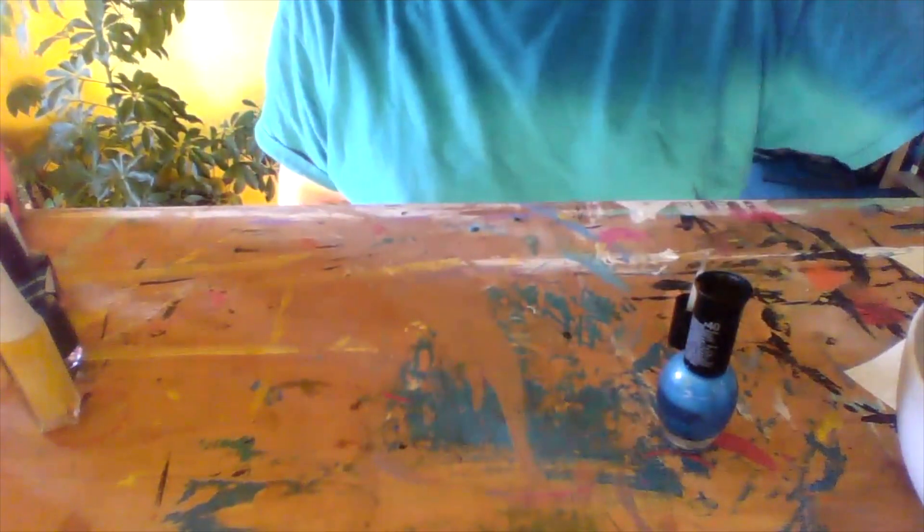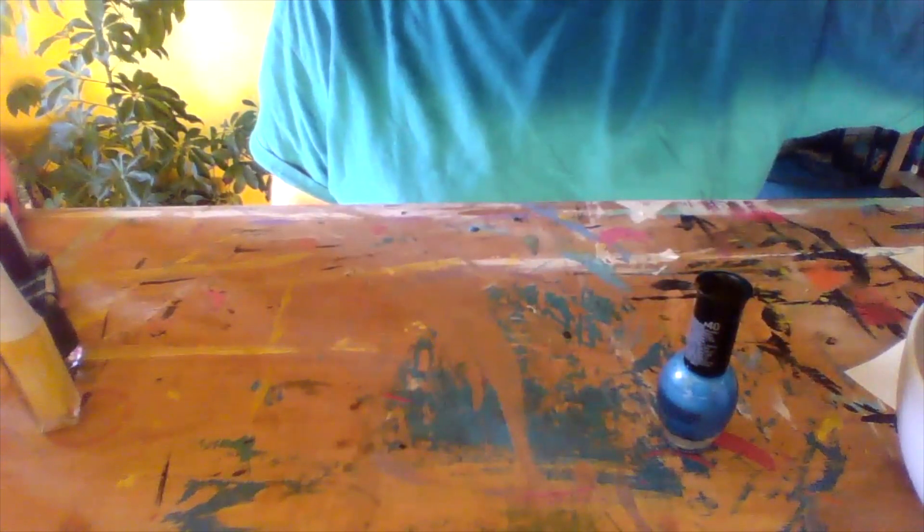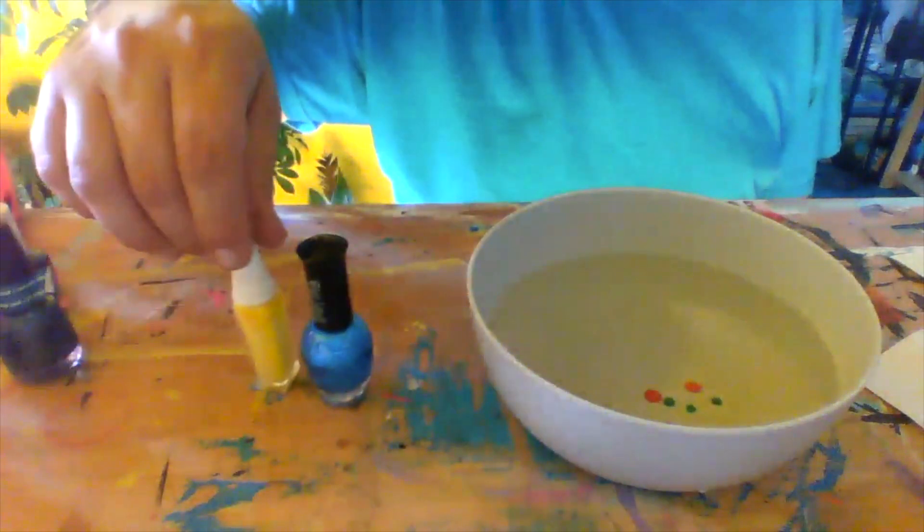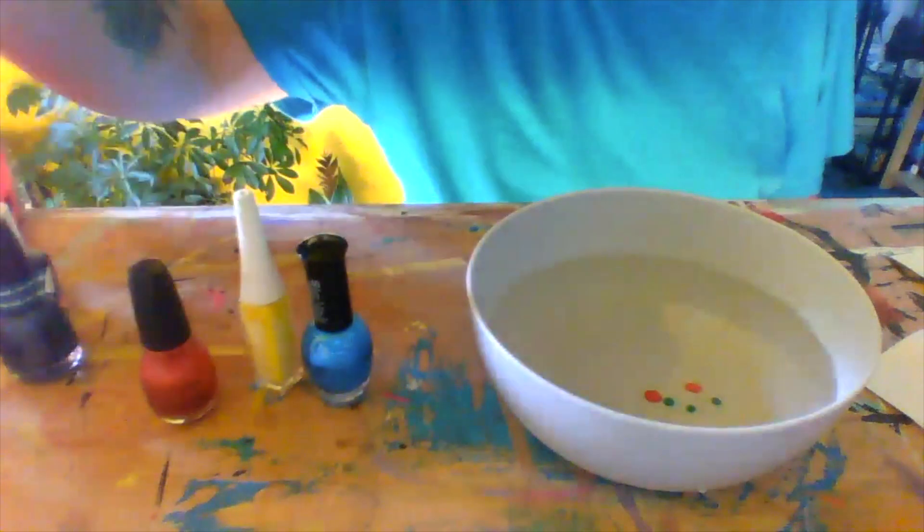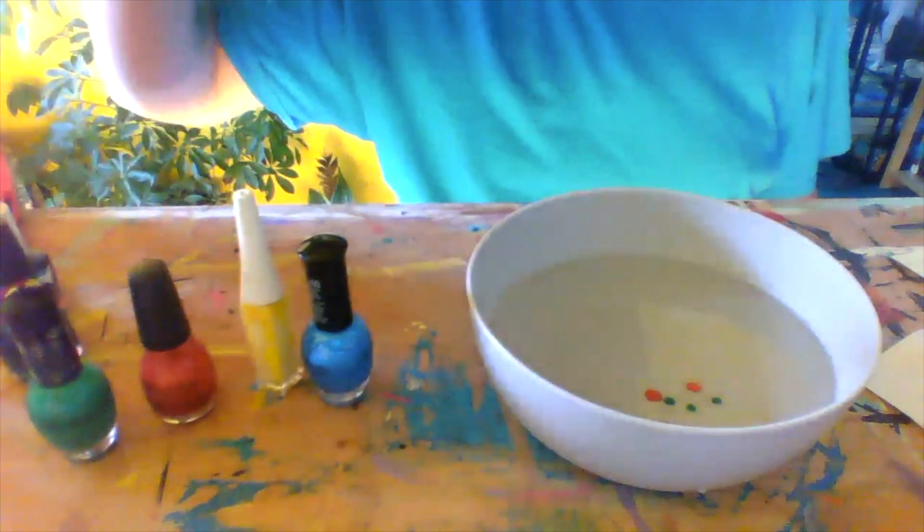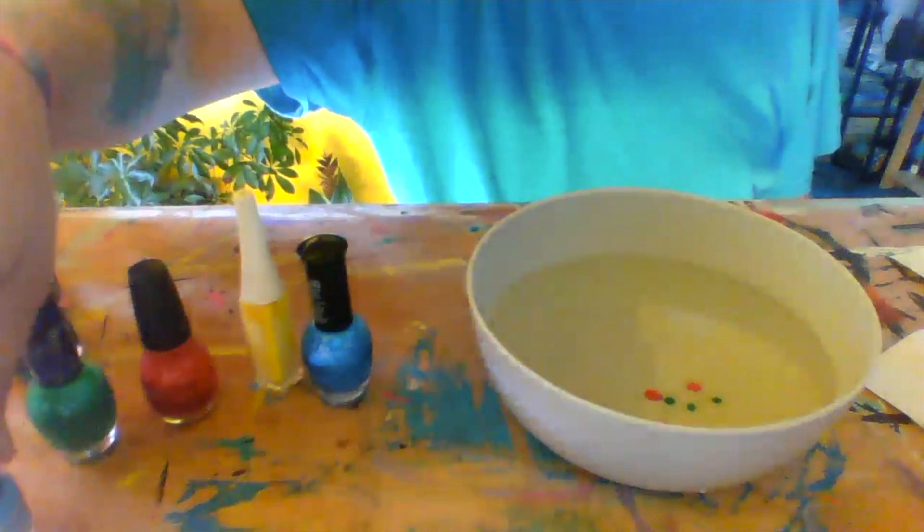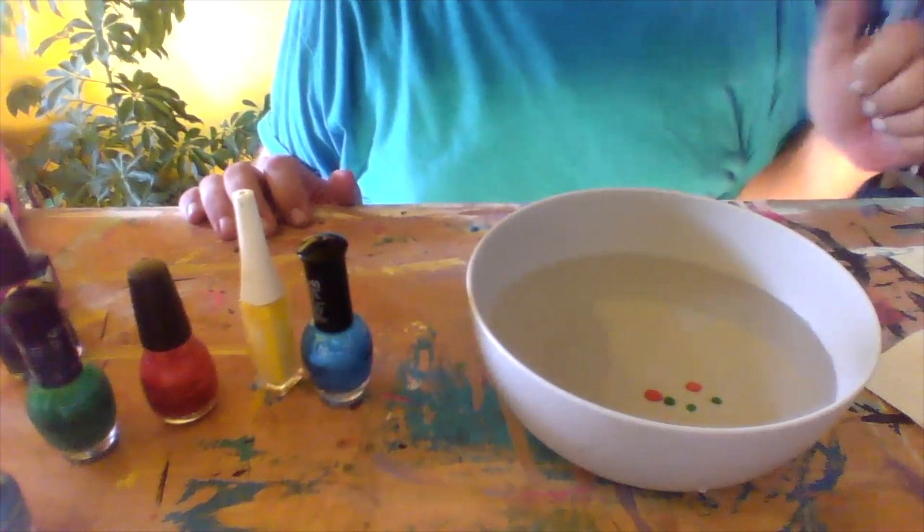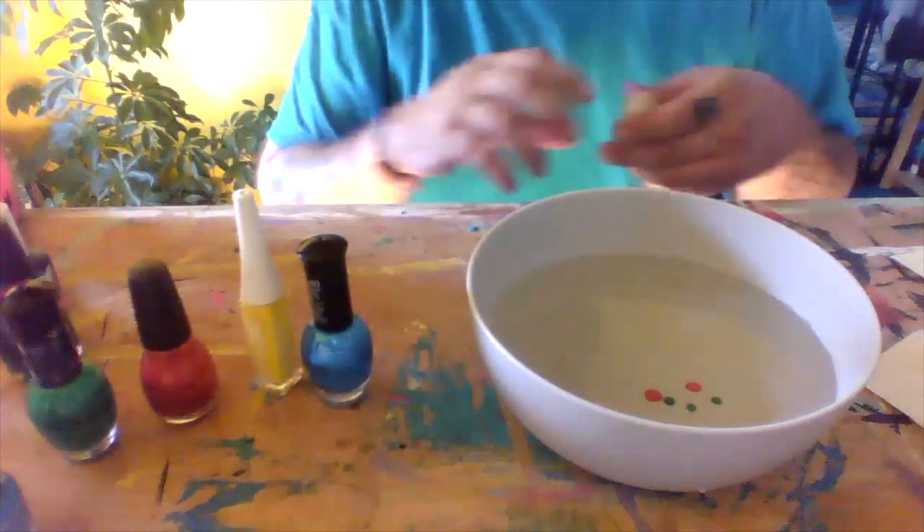Okay, so for today's craft, I'm going to show you guys how to make painted rocks. All you're going to need for this is a bowl of water, a bunch of nail polish, or one thing of nail polish if you're just looking for monochrome, but I like a lot of colors. It comes out looking kind of tie-dye looking, so I think that's pretty cool. So the more colors, the better.